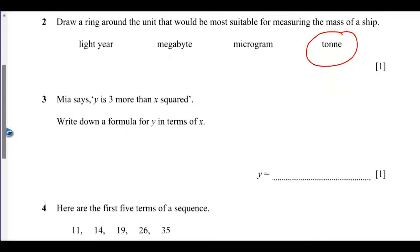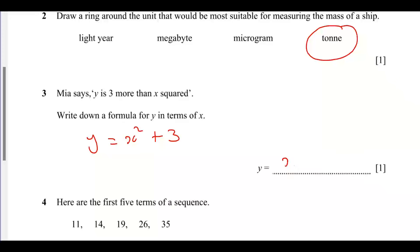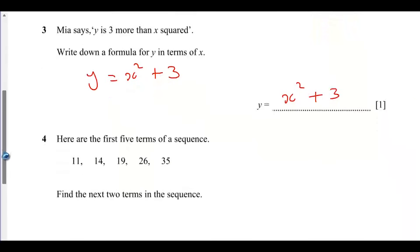Question 3: Mia says y is 3 more than x squared. Write down a formula for y in terms of x. So y will be equals to x squared plus 3. Y is 3 more than x squared, so that is the meaning of that equation.